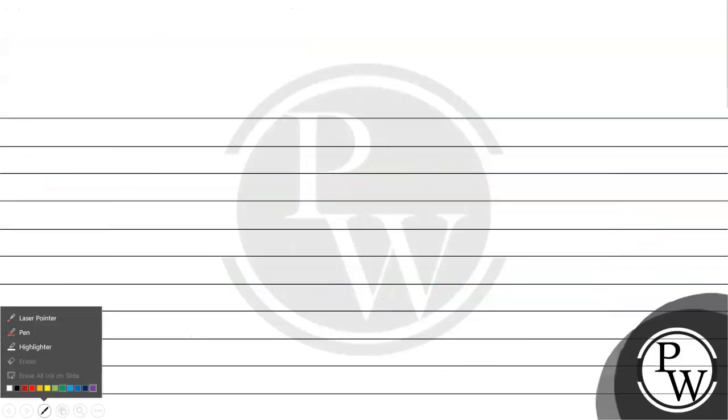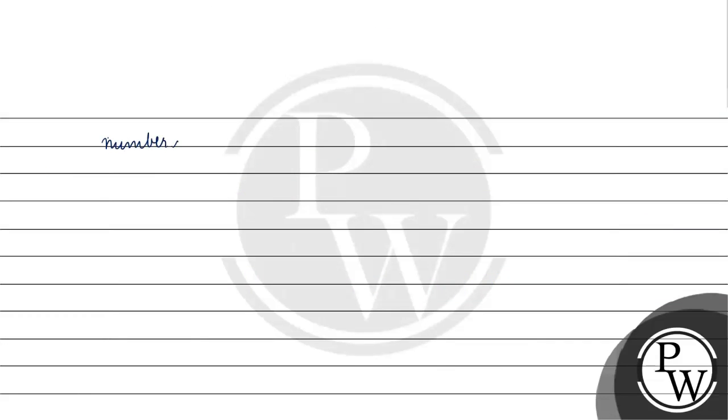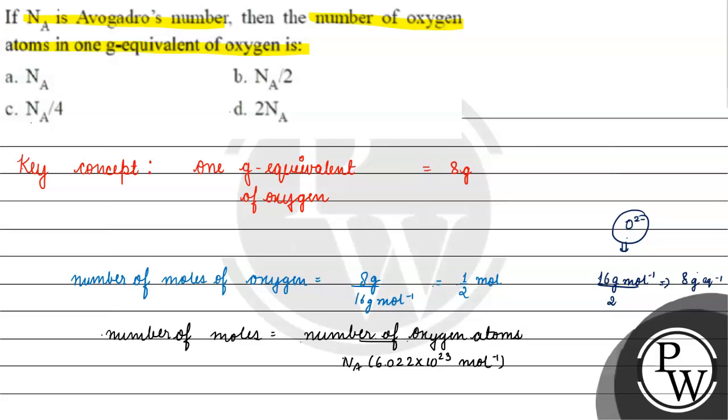So, the number of oxygen atoms will be equal to Avogadro's number into the number of moles, which is half. This gives us Avogadro's number by 2. The correct answer for this question is option B. I hope you understood it well. Thank you and all the best.